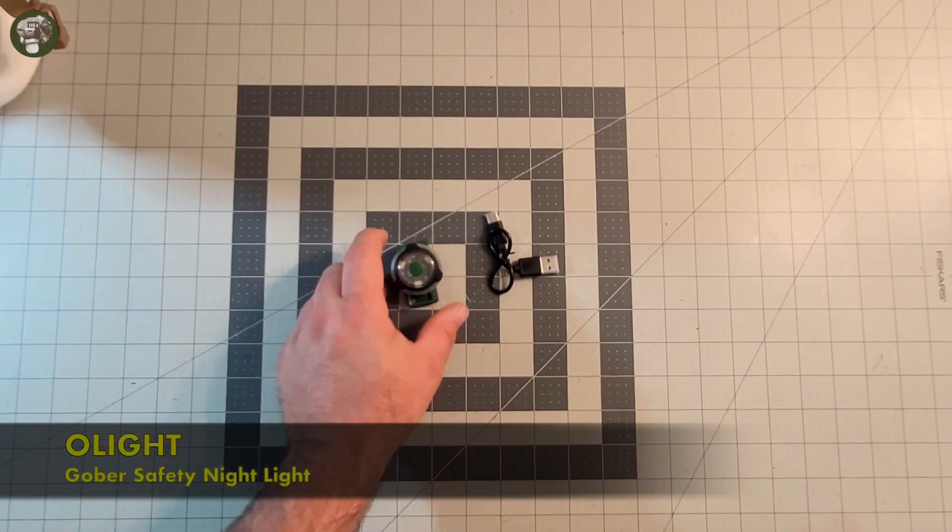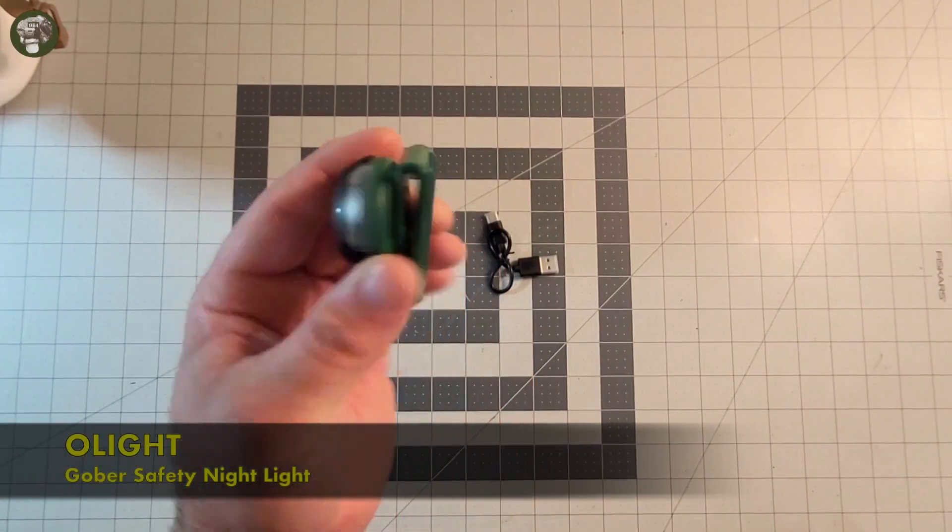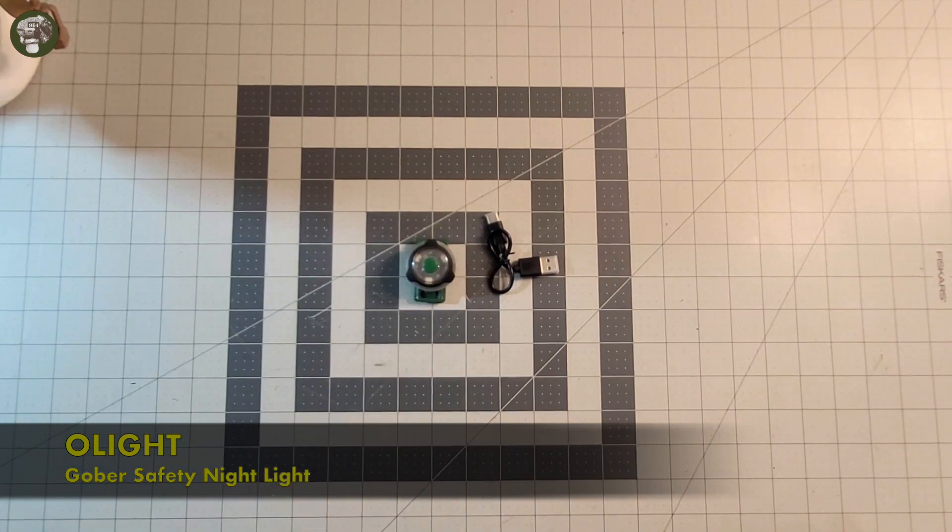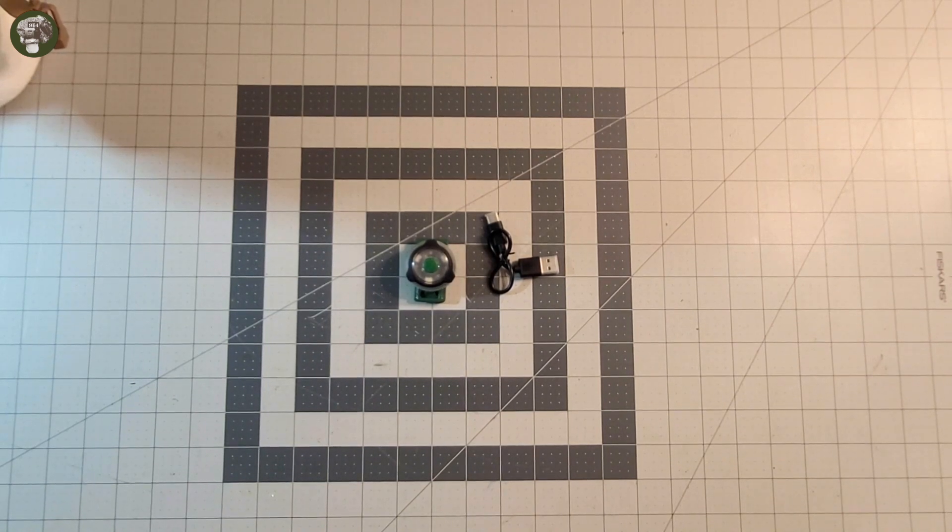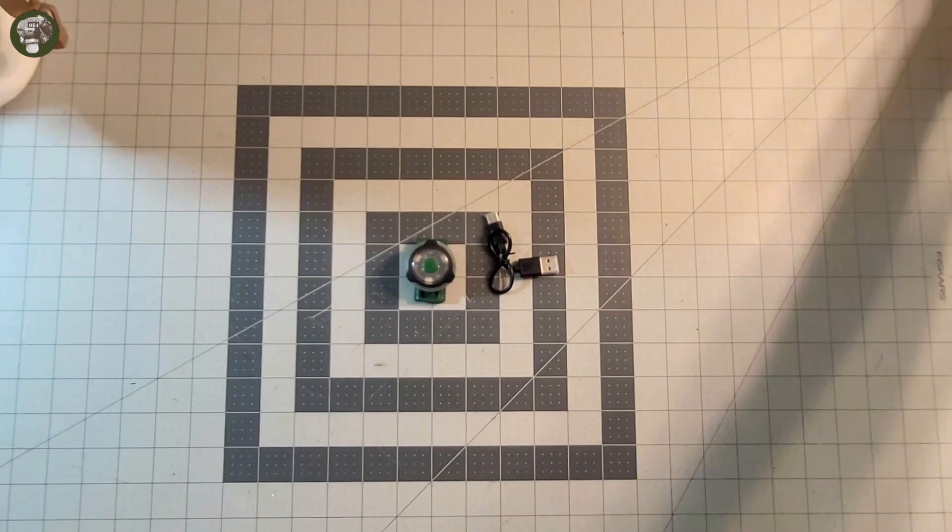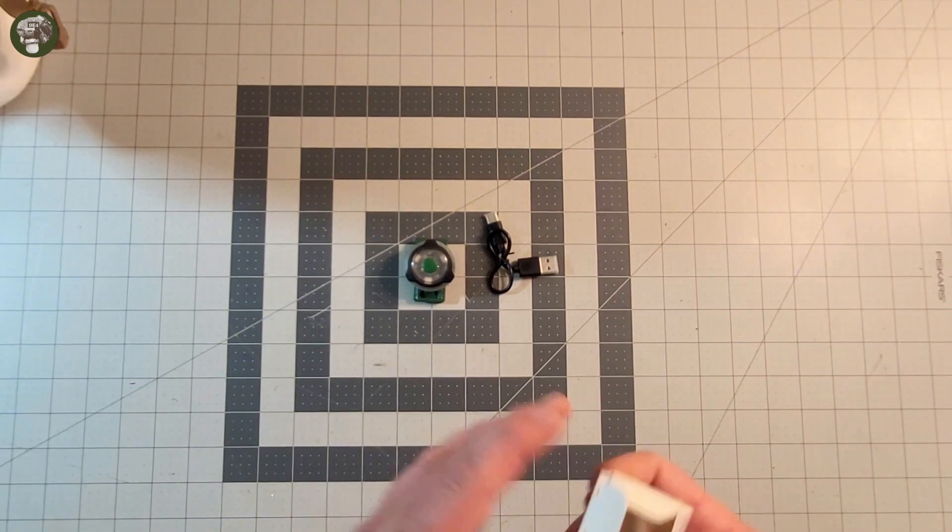Hey everybody, welcome to another review. Today we are checking out this strobe safety light from Olight. It's the Olight Gober, or Goober as I like to call it. When you get it, it comes in this box here. You've got your forbidden candy, this nice little box.